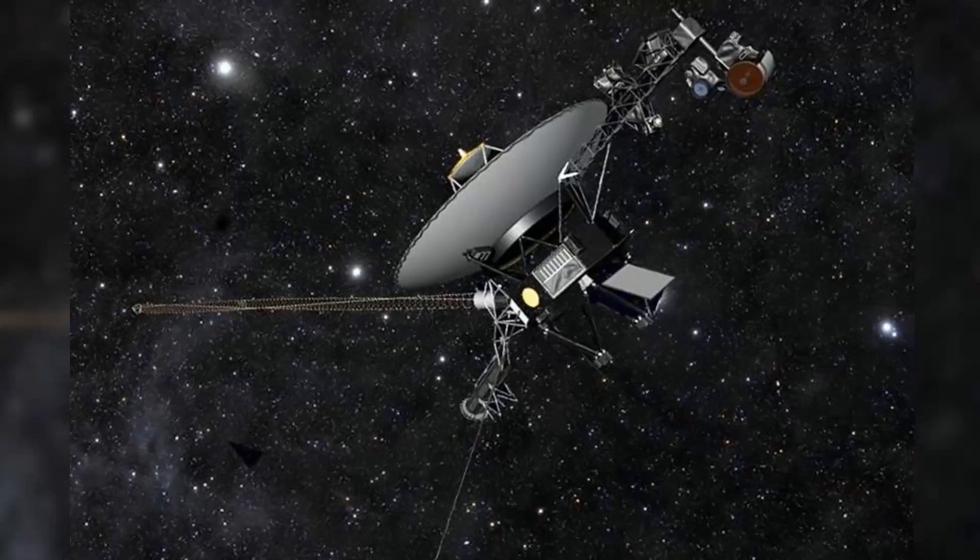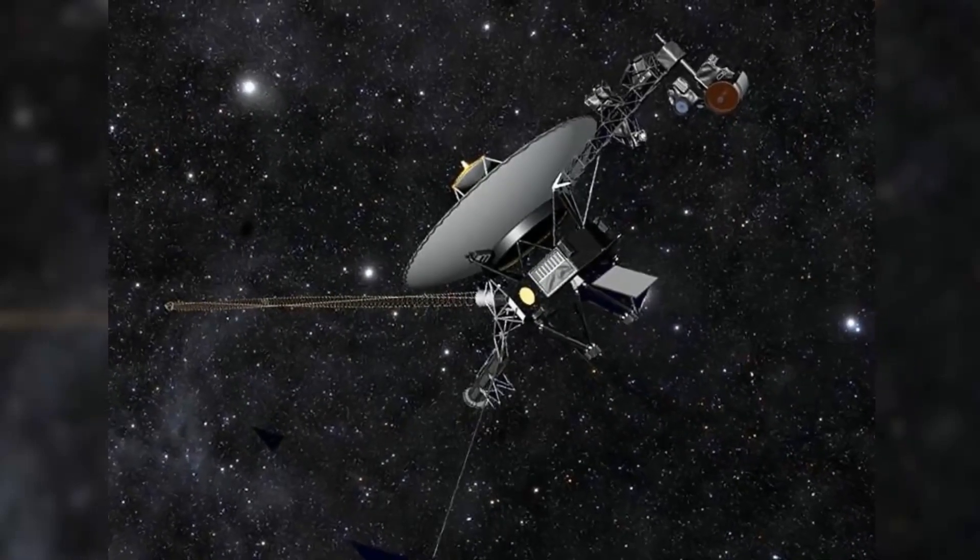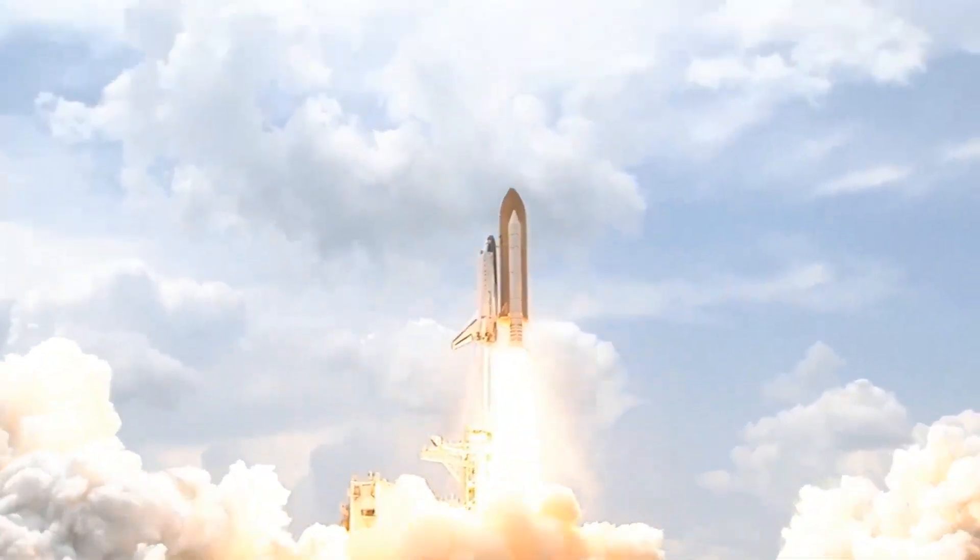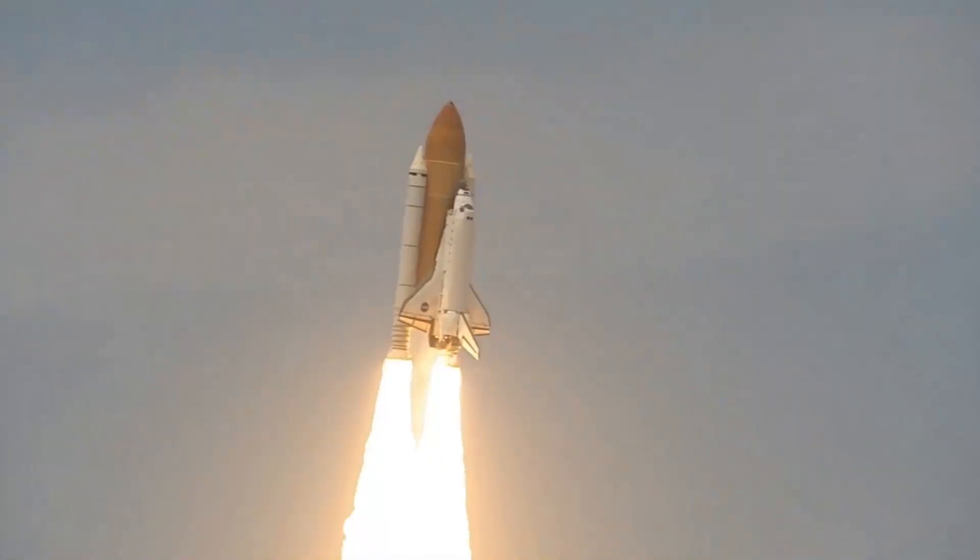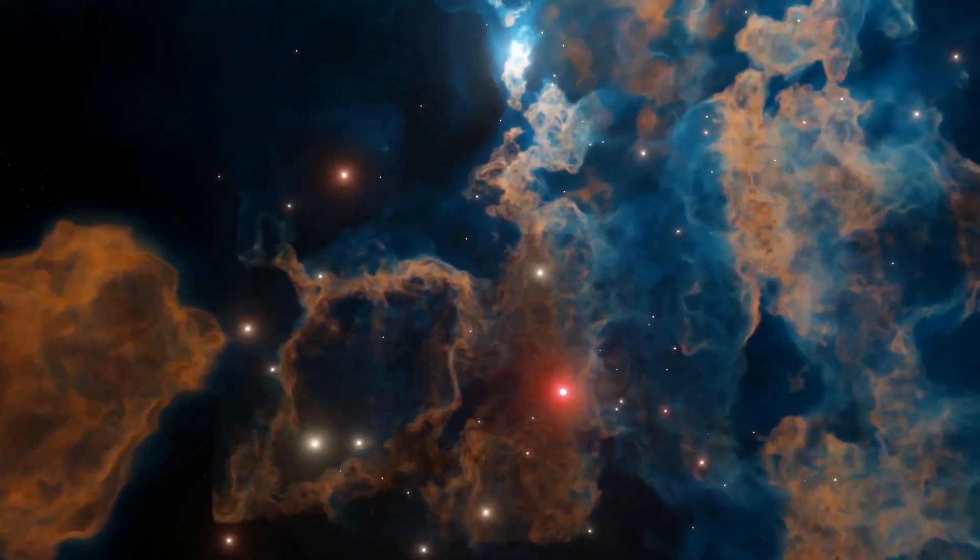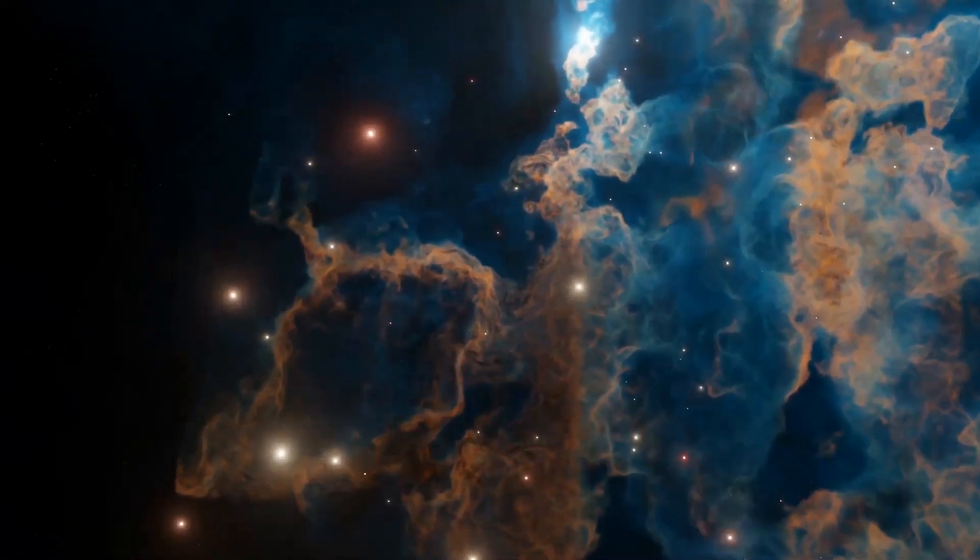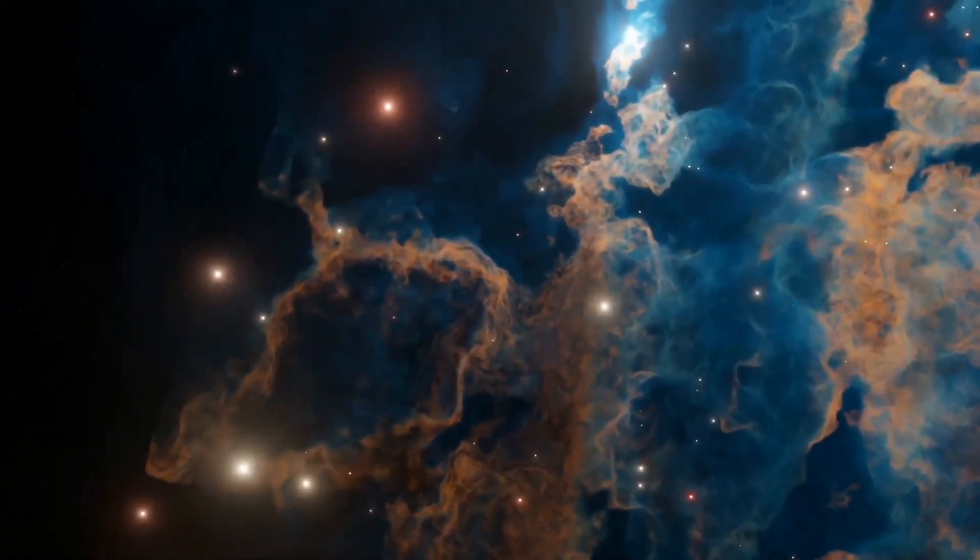The Voyager program consists of two robotic interstellar probes called Voyager 1 and Voyager 2. They were launched way back in 1977, making the program the longest one in human history. What's even more inspiring is the fact that the probes continue to send back data to Earth to this very day, making them an invaluable tool for space exploration.